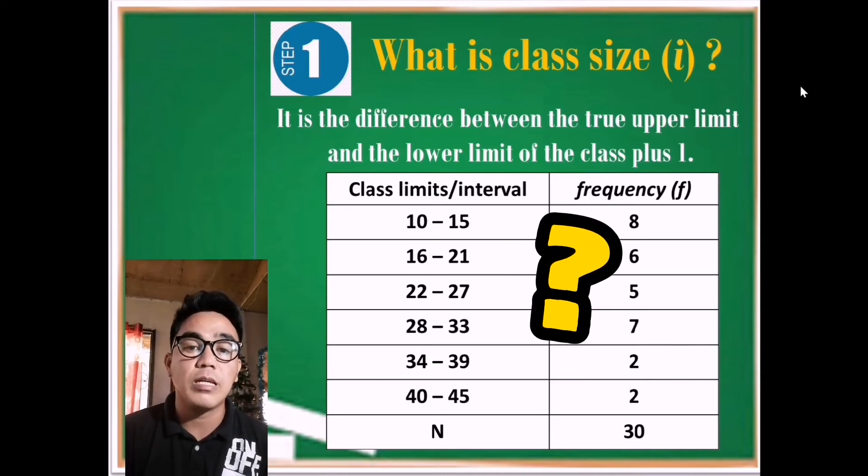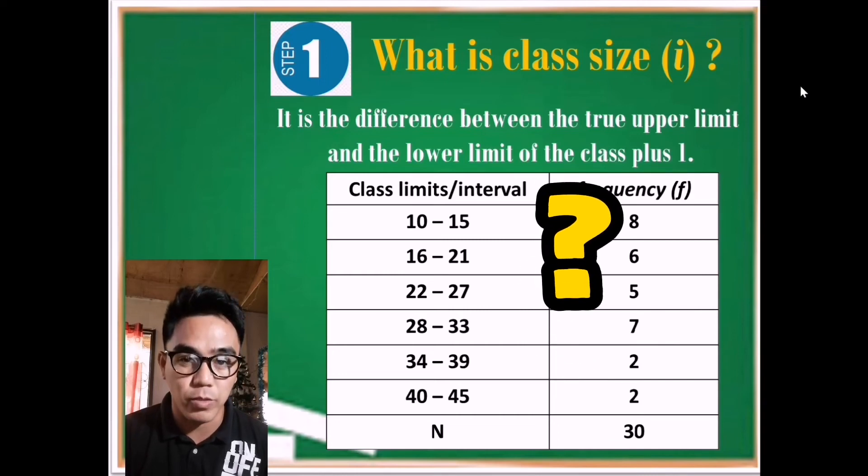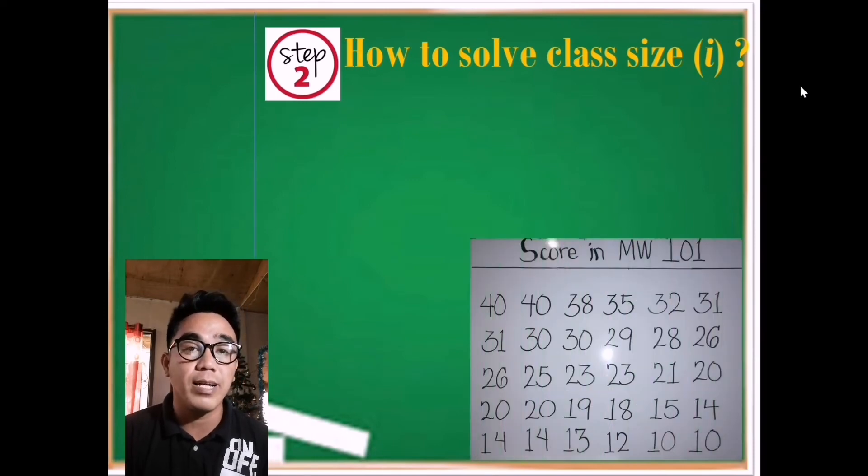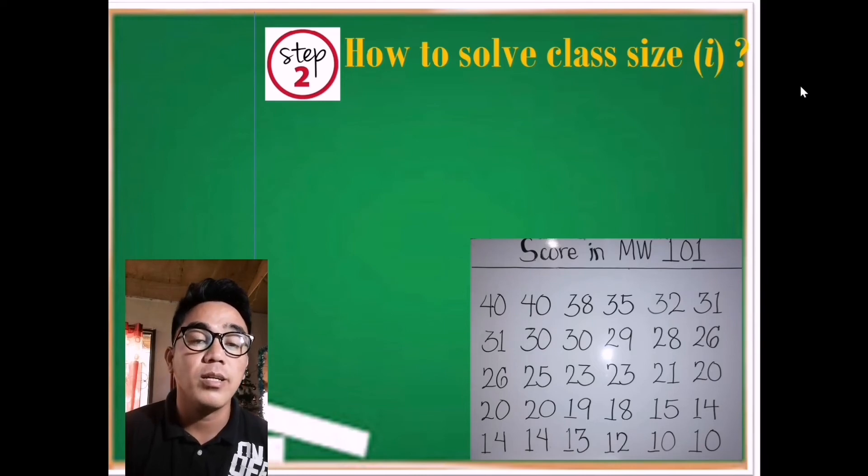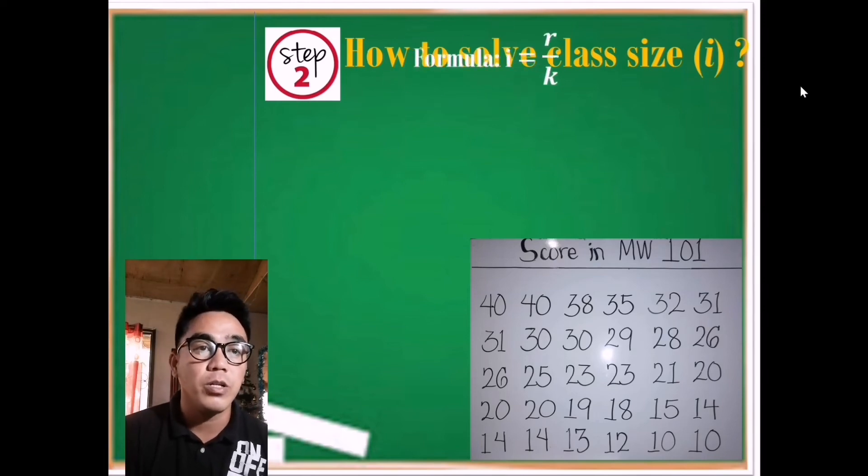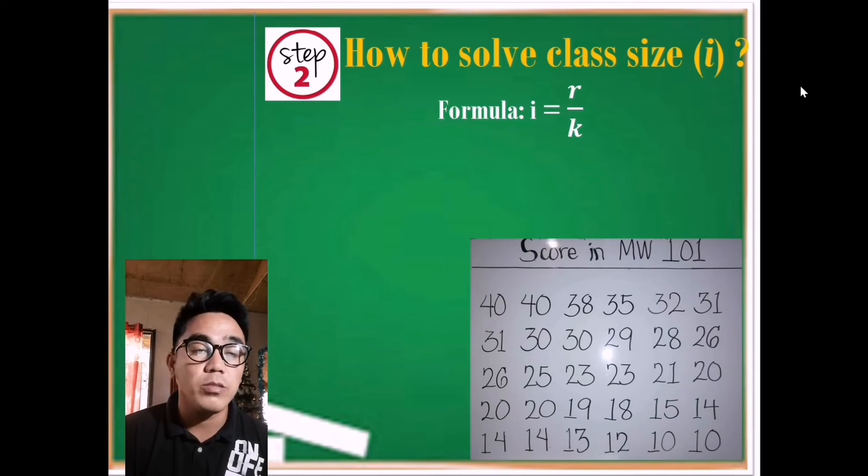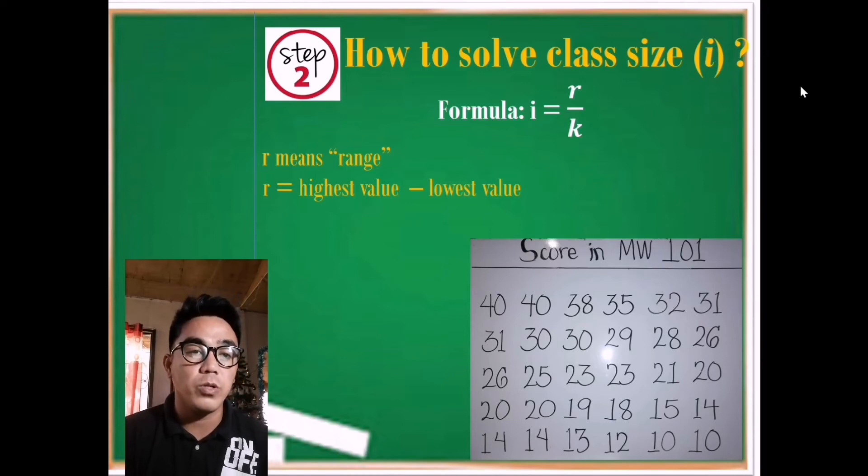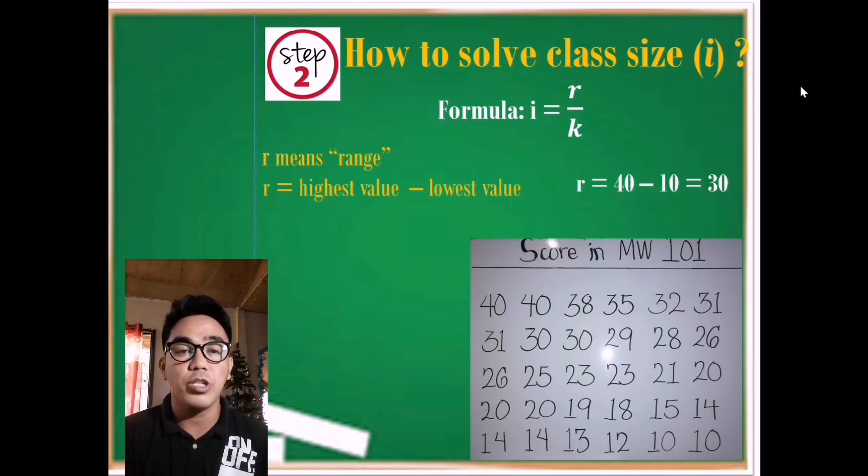But what if the given is not in the frequency distribution but rather in a raw score? Let us learn how to solve class size or small i when the given is in a raw score. Okay, let us have this process. Number one: we're going to know the formula, i equals r over k. Then second, we're going to identify the different terms. R means range, and how are we going to solve the range? The range is the highest value minus the lowest value. So in our given raw score, the highest is 40, the lowest is 10. Subtract them, we got 30. So the range is 30.